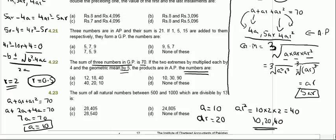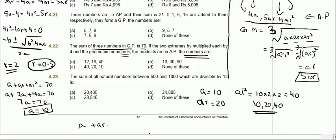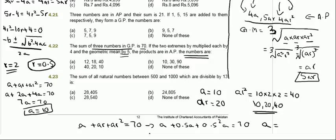If r equals 0.5, then a plus 0.5a plus 0.25a equals 70, giving 1.75a equals 70.